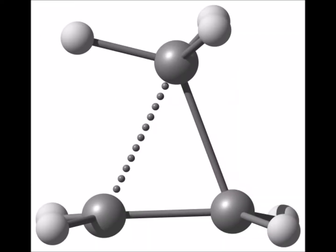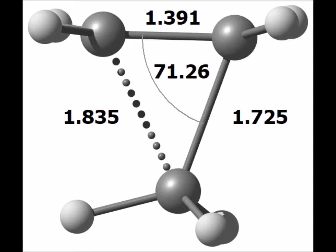This is the 1-propyl carbocation, which is also a primary cation. The structure is quite similar to that of the ethyl carbocation, but now there is a methyl group rather than a hydrogen atom bridging the two carbons.